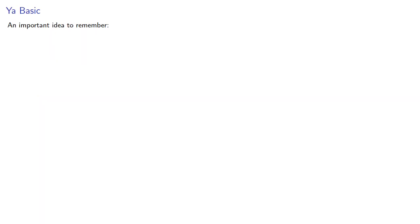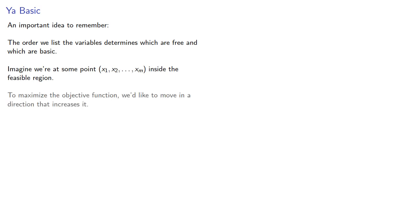An important idea to remember: the order we list the variables determines which are free and which are basic. Now imagine we're at some point inside the feasible region. To maximize the objective function, we'd like to move in a direction that increases it. But this is the same as choosing the values of our variables. So what if we rewrote our system so that these variables were free?